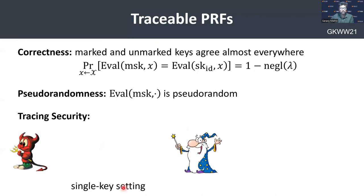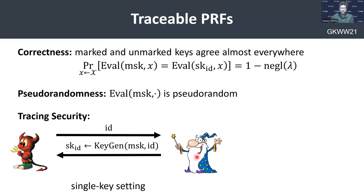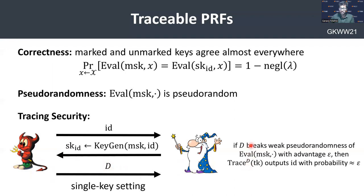Here is the game. The adversary queries the challenger with an identity ID, to which the challenger responds with a marked key. Finally, the adversary outputs a distinguisher D. The security property precisely states that if D breaks weak pseudorandomness of the eval algorithm with non-negligible advantage epsilon, then the tracing algorithm should output an identity with probability as close as possible to epsilon. This is the single-key setup, meaning the adversary queries only one identity.